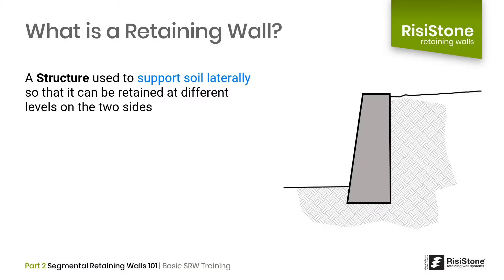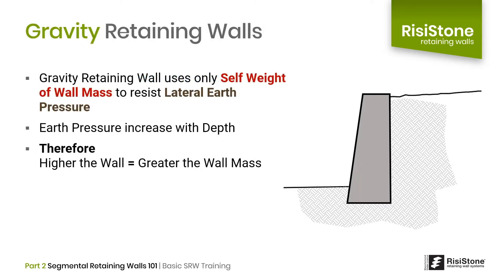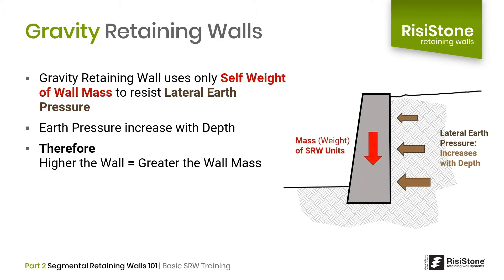In general terms, a retaining wall is a structure used for supporting soil laterally so that it can be retained at different levels on two sides. A gravity retaining wall uses only the self-weight of the wall mass to resist lateral earth pressure. Lateral earth pressure increases with depth behind the wall, so the wall mass must be sufficient to overcome these forces. Therefore, the higher the wall, the greater the resisting mass must be.